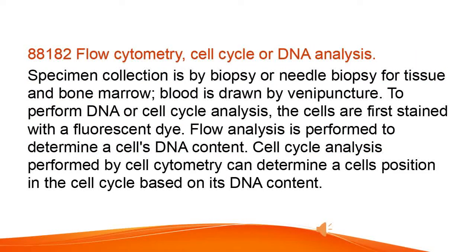Flow cytometry, cell cycle, or DNA analysis. Specimen collection is by biopsy or needle biopsy for tissue and bone marrow; blood is drawn by venipuncture. To perform DNA or cell cycle analysis, the cells are first stained with a fluorescent dye. Flow analysis is performed to determine a cell's DNA content. Cell cycle analysis performed by flow cytometry can determine a cell's position in the cell cycle based on its DNA content.